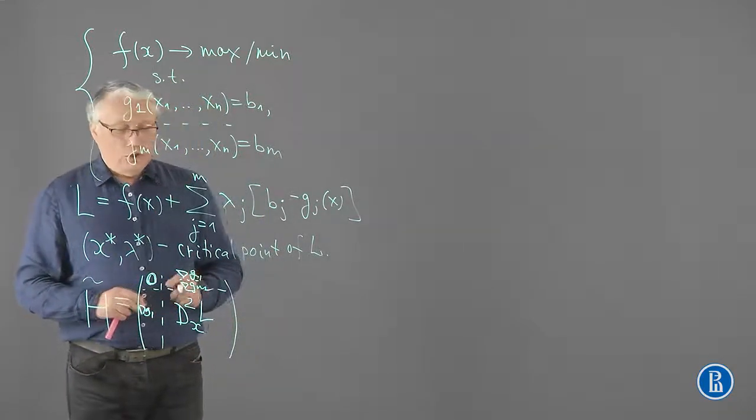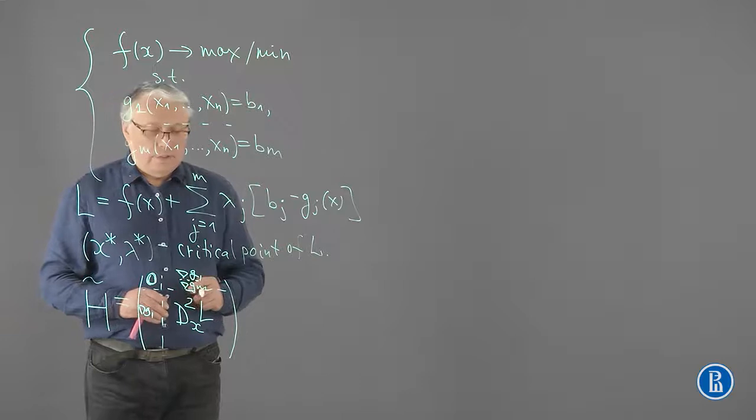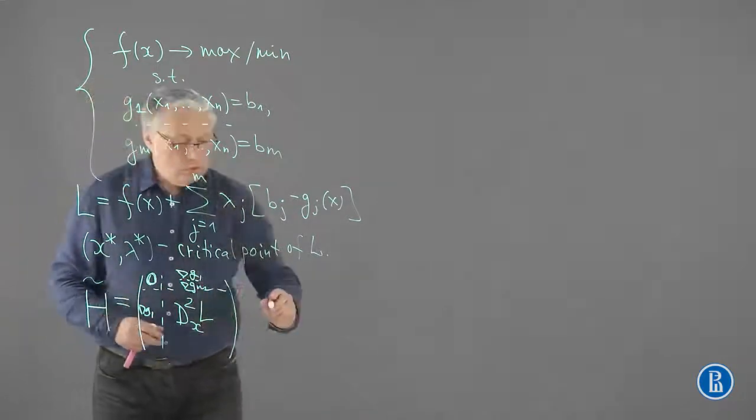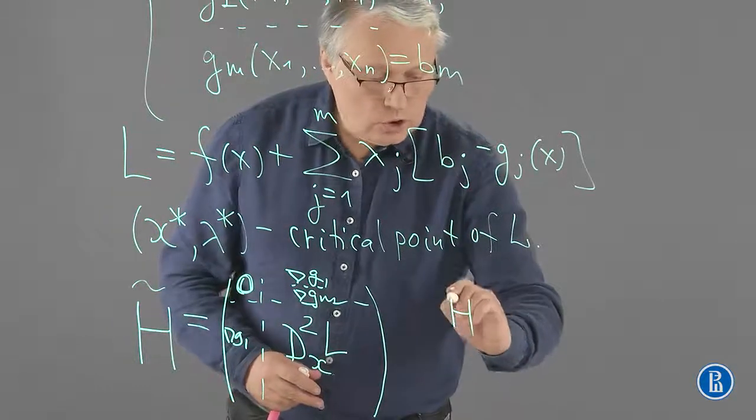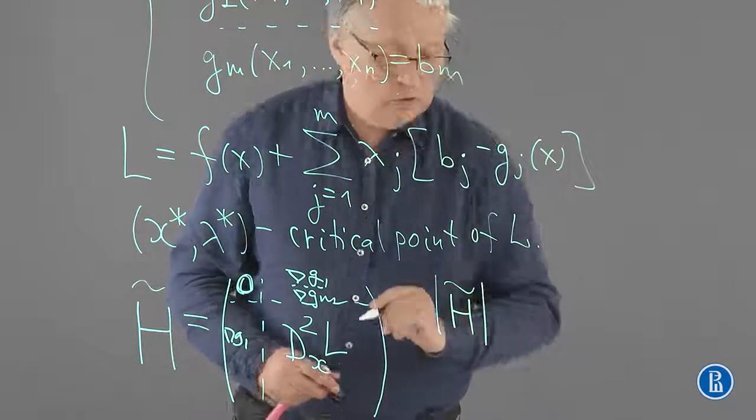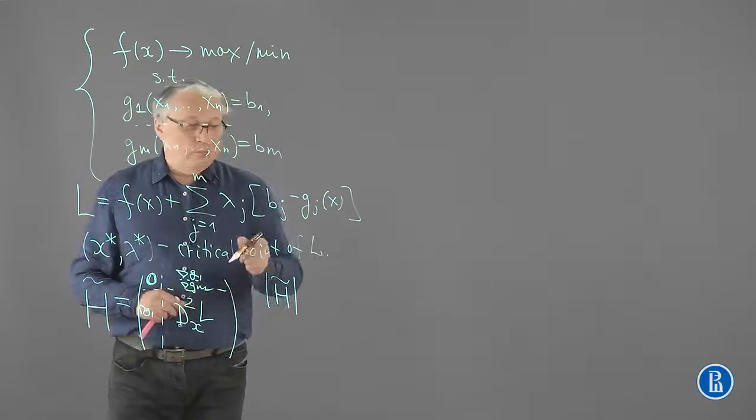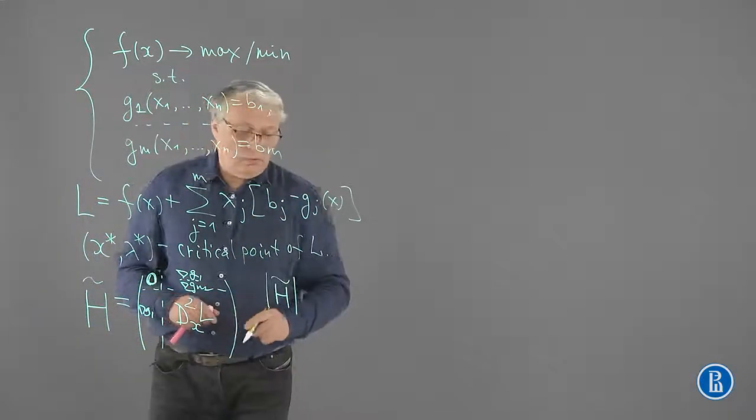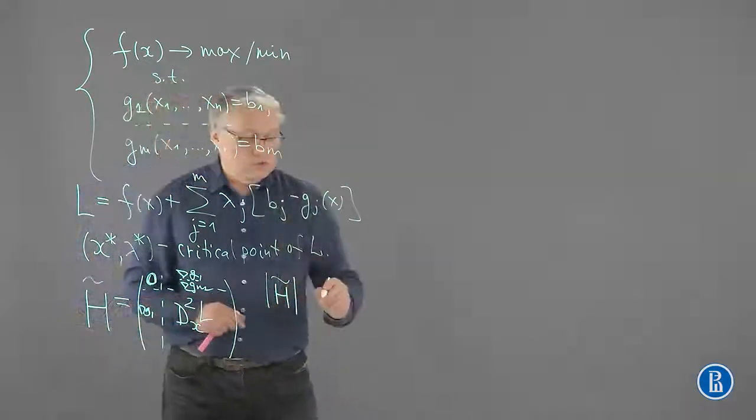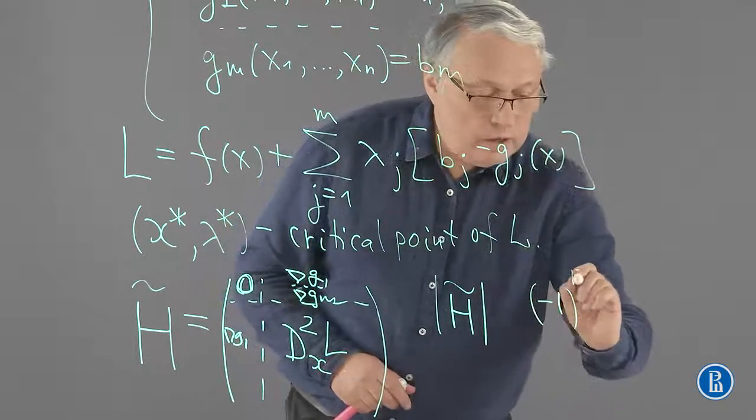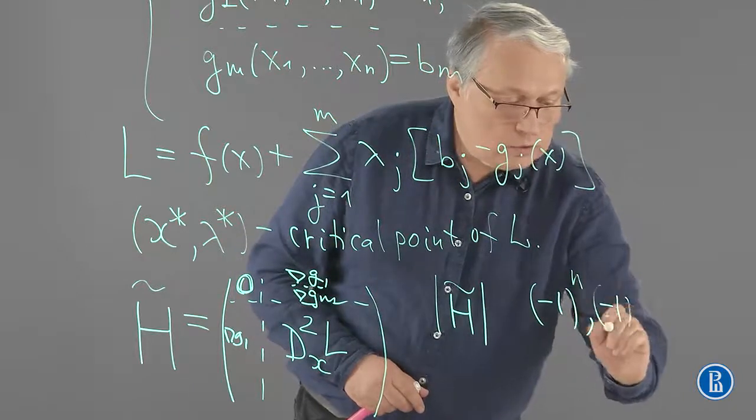Now, we proceed checking the leading principal minors, starting with the biggest. The biggest is H tilde determinant. So we compare the sign of this determinant with the sign of minus 1 to the mth power.